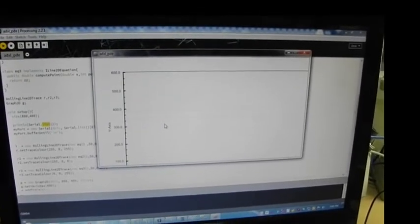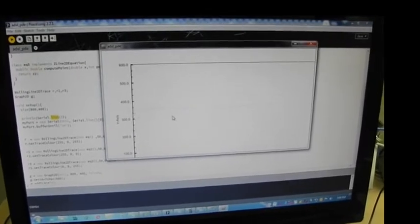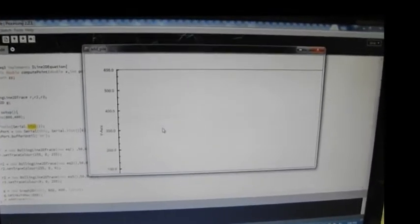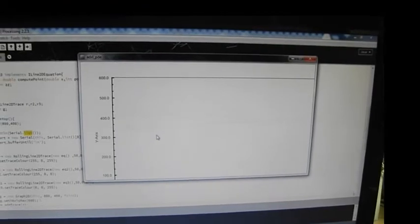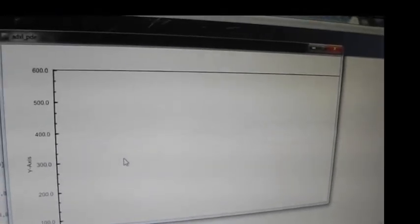I am changing the sensor position. You can see the variation in the graph. All three axis data are varying here.